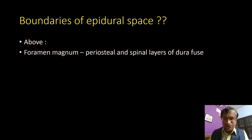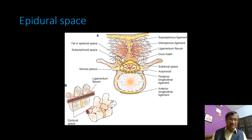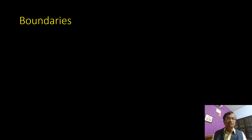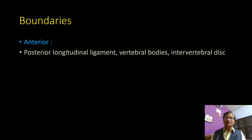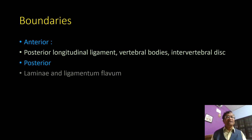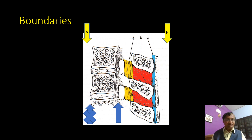Above, the epidural space is bounded by the foramen magnum where the periosteal and spinal layers of dura fuse. Below, it is the sacrococcygeal membrane. Anteriorly, the boundary is the posterior longitudinal ligament, vertebral bodies, and intervertebral discs. Posteriorly, it is bounded by the ligamentum flavum and lamina. Laterally, the boundaries are the pedicles and intervertebral foramina.